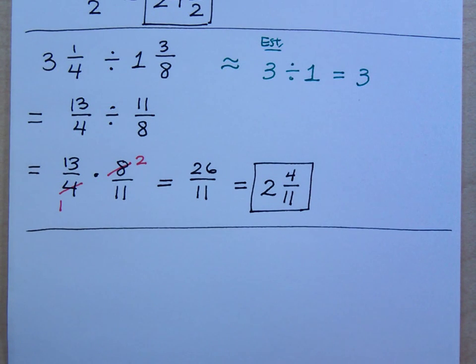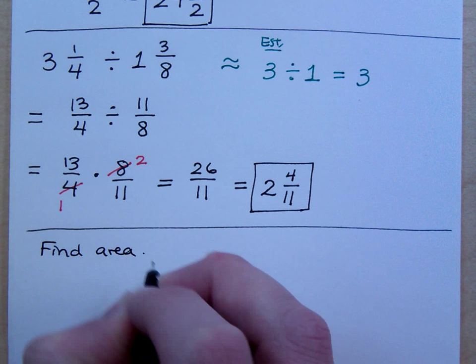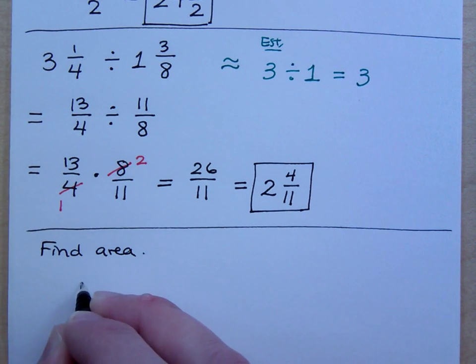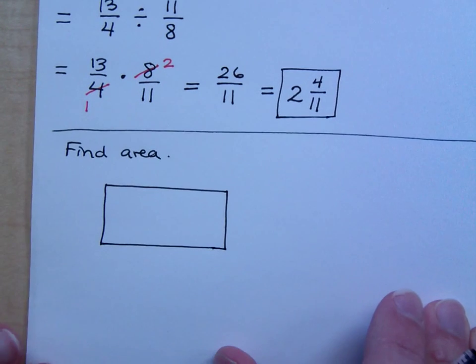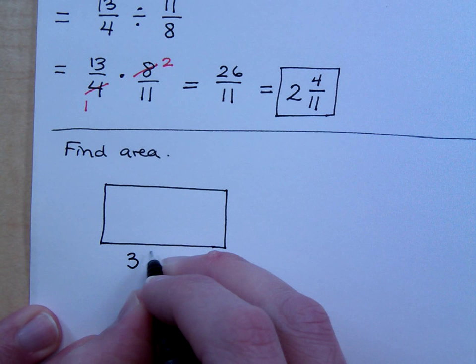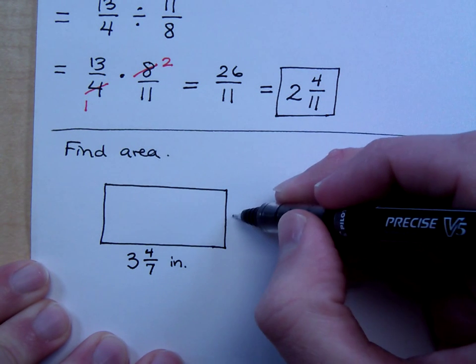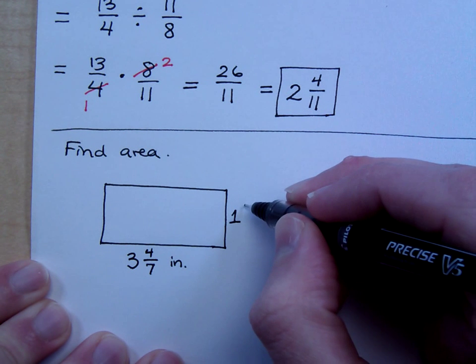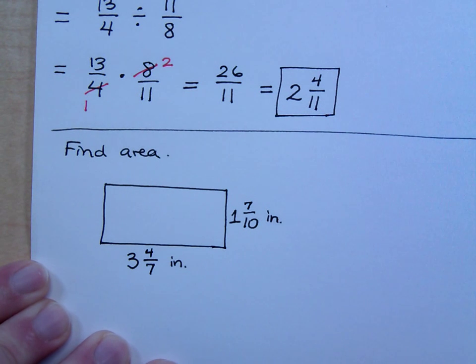And again, the estimating is not a mandatory thing, but again, it's useful. And if we were to do something like this, I could ask you to find the area if I gave you... Suppose I gave you a rectangle. We all love rectangles, right? And if I were to say that this guy is 3 and 4 sevenths inches, and this part here is 1 and 7 tenths inches. Can you find the area? Well, this would be a good question to have on a test.